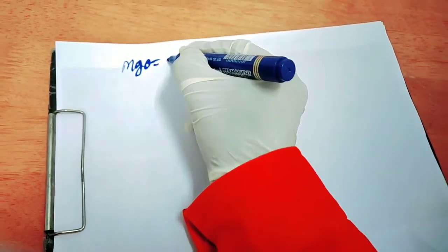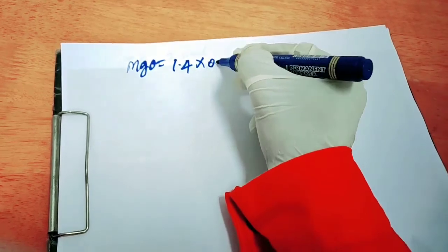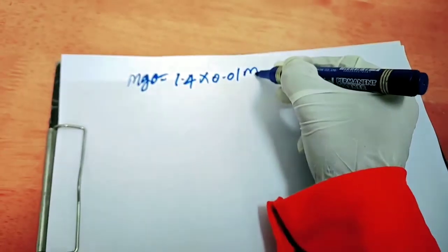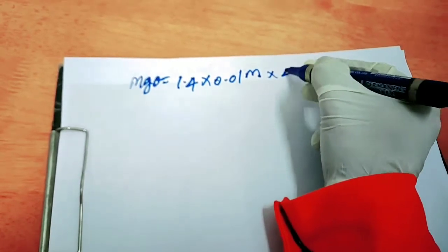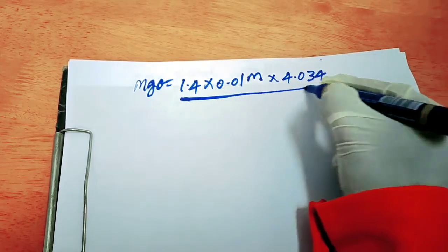So let's go for MgO. We are titrating 1.4 into 0.01 molar into factor 4.034. It is factor from standard.